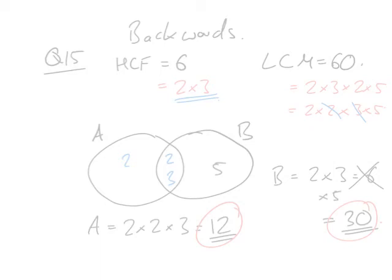Now if we go ahead and multiply to find out what number A is, it's two times two times three, which is twelve, and B is three times two times five, which is thirty.